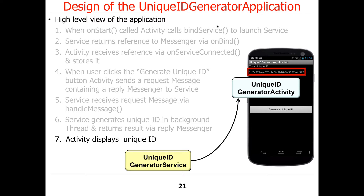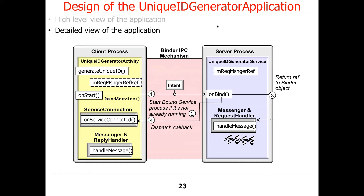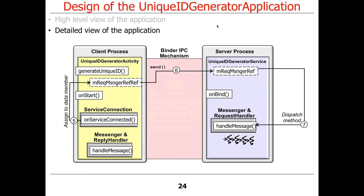Here's a more detailed look. You call bindService, which goes over to onBind. That gets a reference to the messenger object, passes it back via a callback, and the callback stashes it in a local field. Then when the method is called to generate the ID, it sends the request to the reference, which dispatches it, and the result comes back to the client.